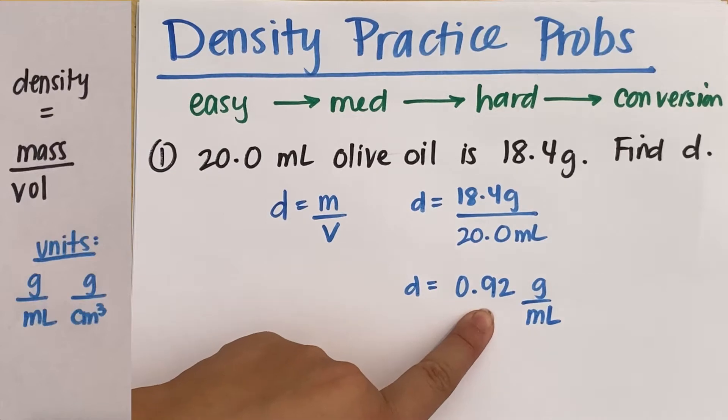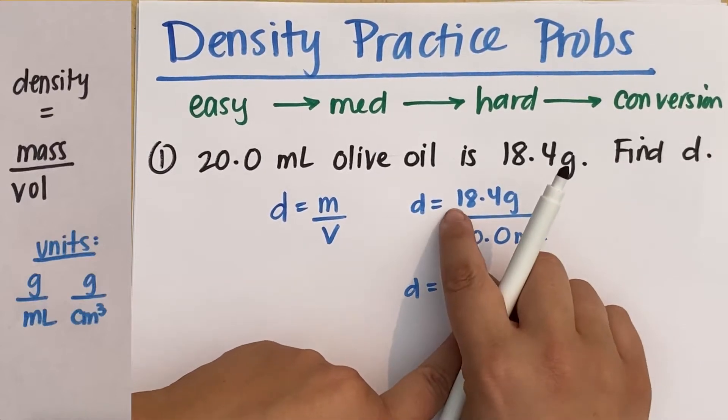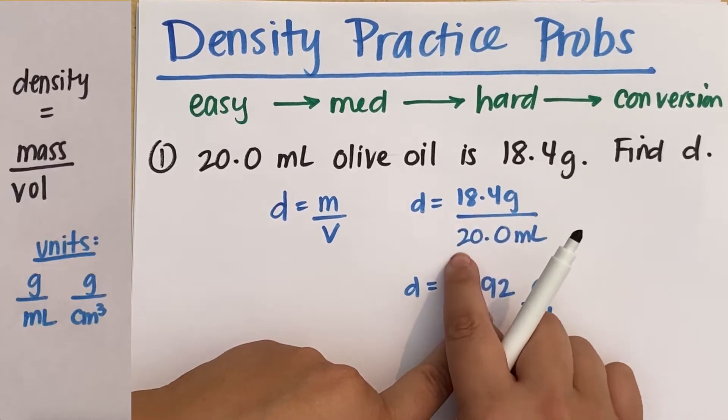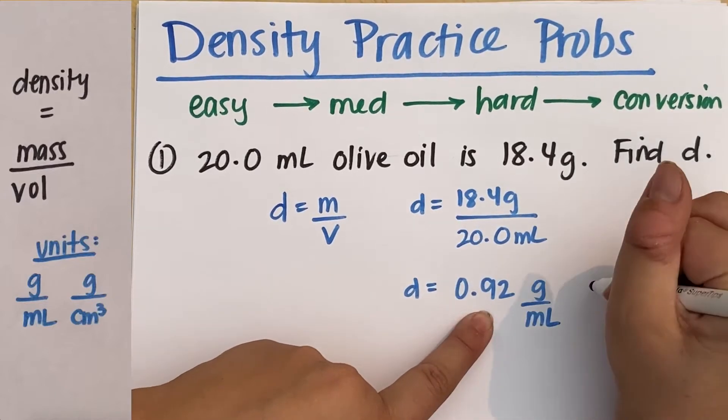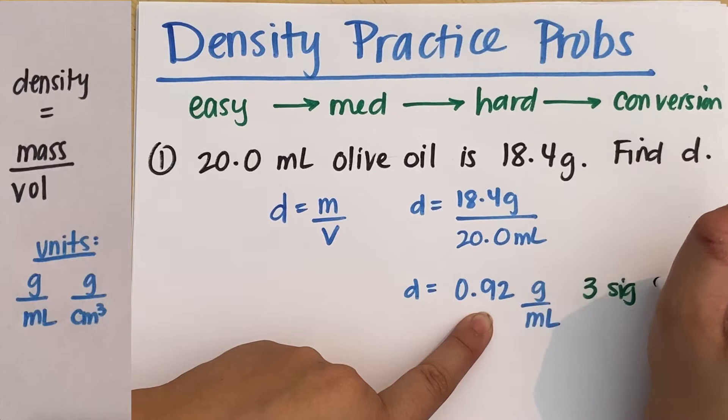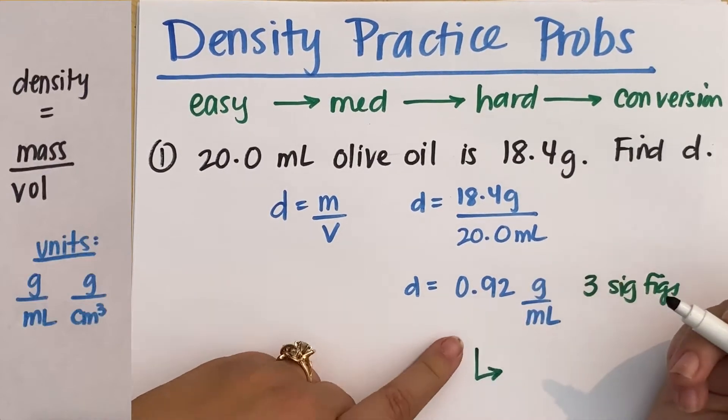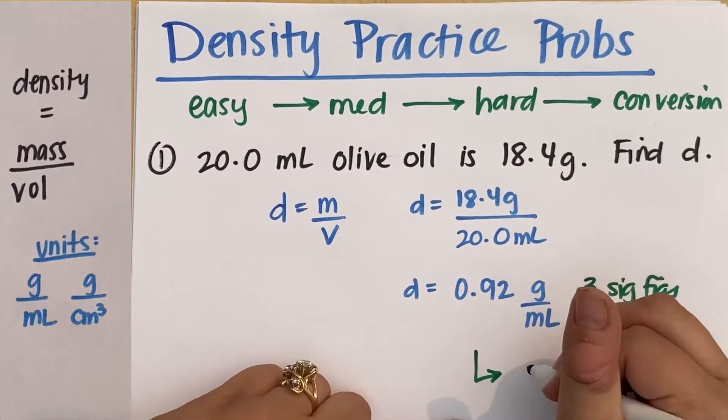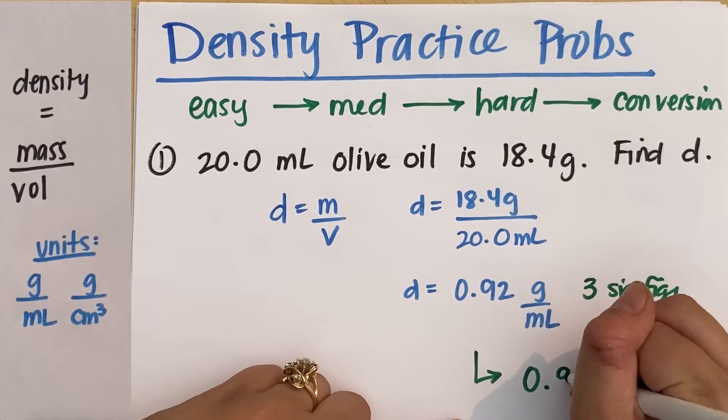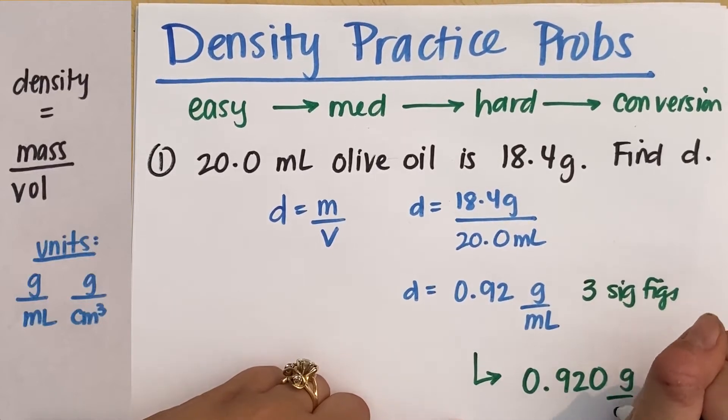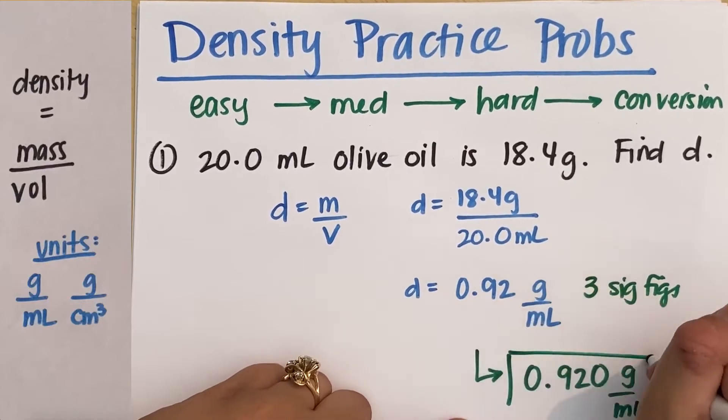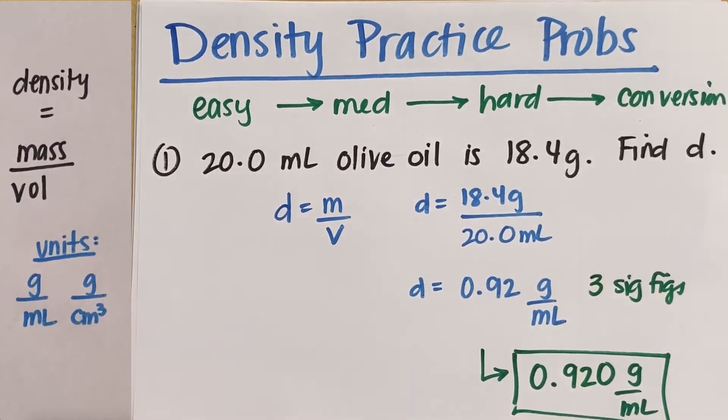Now, if I was paying attention to my sig figs, I would notice that this one starts with three sig figs. This one also has three sig figs, so my answer should have three sig figs. I only have two sig figs here. So the way I fix that is I need to add a zero at the end. So my density is going to be 0.920 grams per mil. That was easy.